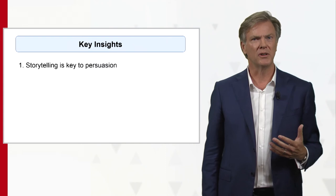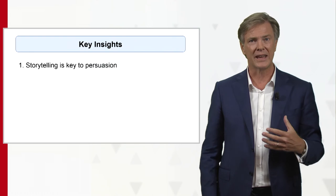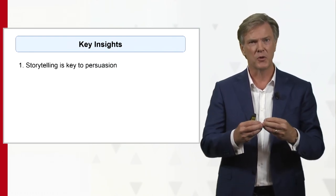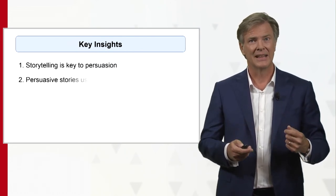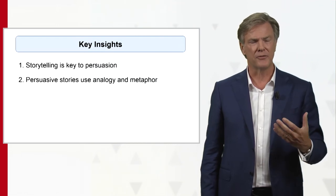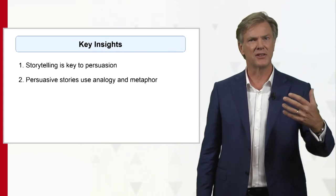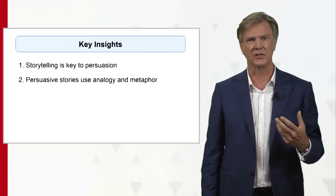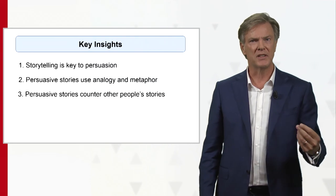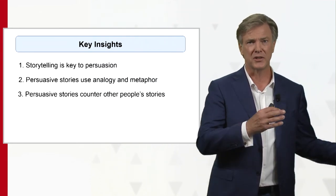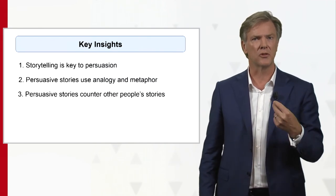What are the key insights of this model? First of all, storytelling is all about persuasion — we're not really coming up with factual arguments, but we're trying to speak to people's hearts to get them to come on board. At the same time, we're using analogies and metaphors, not all the factual arguments — we're saying 'it's just like this,' trying to appeal to people's current knowledge and give them examples they can relate to. Third, other people will also be telling stories, saying 'we can't do this because of that,' so you need to come up with stories that counter their stories.